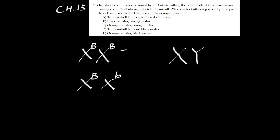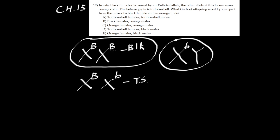Black fur will be X capital B, X capital B. So this is black and heterozygote would be turtle shell. What kind of offspring would you expect from the cross of a black female, X capital B, X capital B, with an orange male, X lowercase b Y?